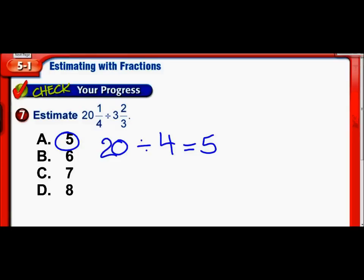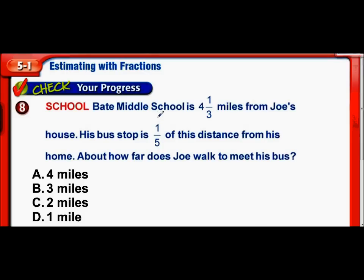I think our next one is our real world example. So Bate Middle School is 4 and 1 third miles from Joe's house. His bus stop is one fifth of that distance from home. About, there's our indication that we can estimate, about how far does Joe walk to meet his bus. So I need really one fifth of, now we'll talk about this in class, when you see the word of, that means you're supposed to multiply. So one fifth of this distance, the distance the school is from his house. So one fifth of, of means times, the distance of 4 and 1 third.